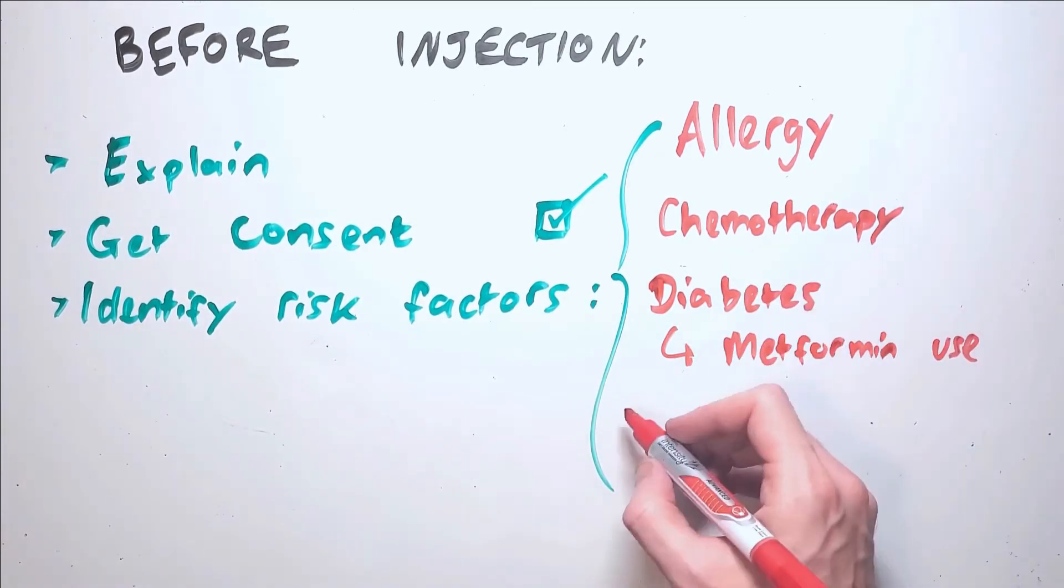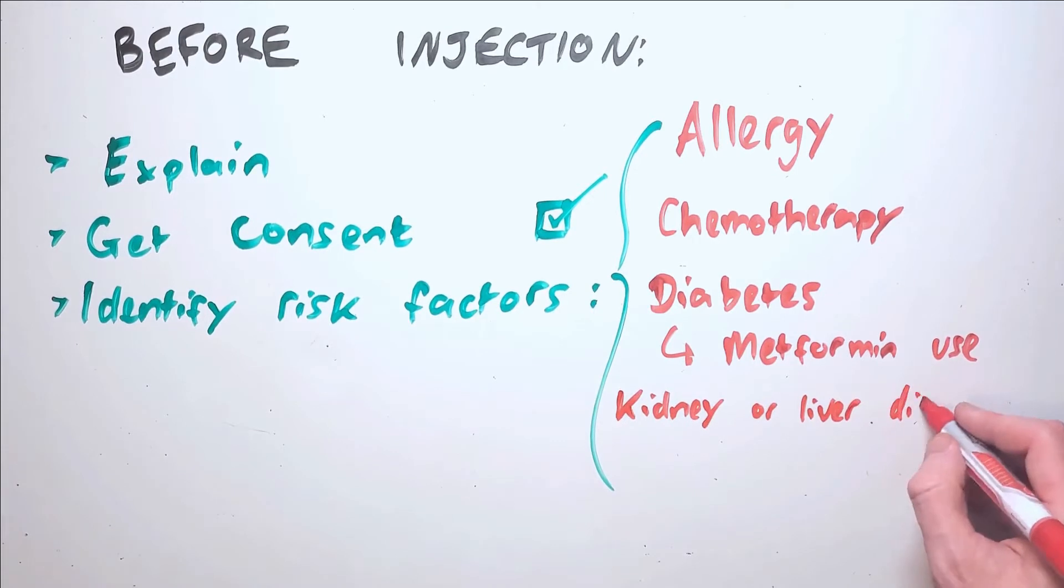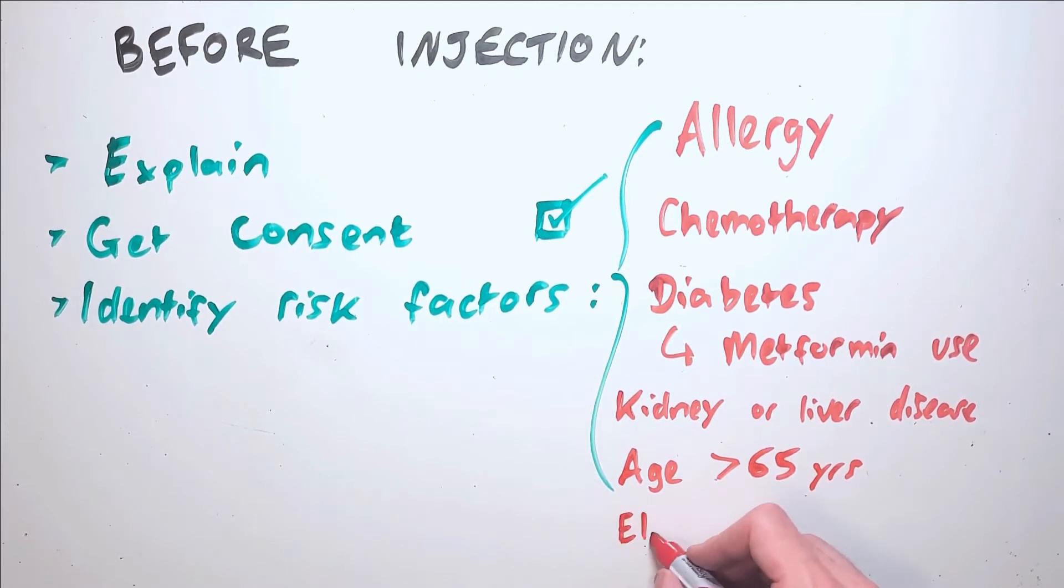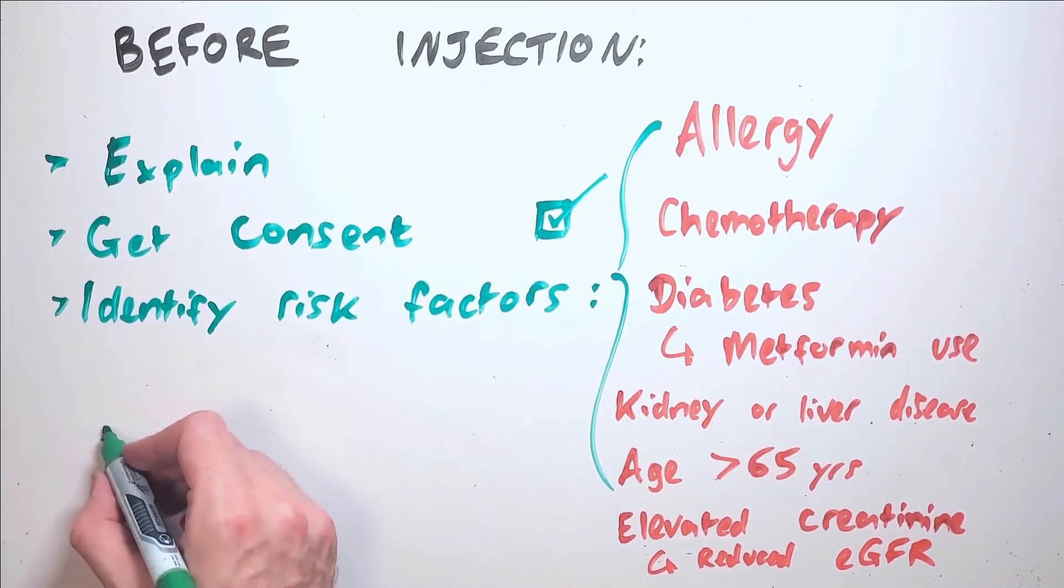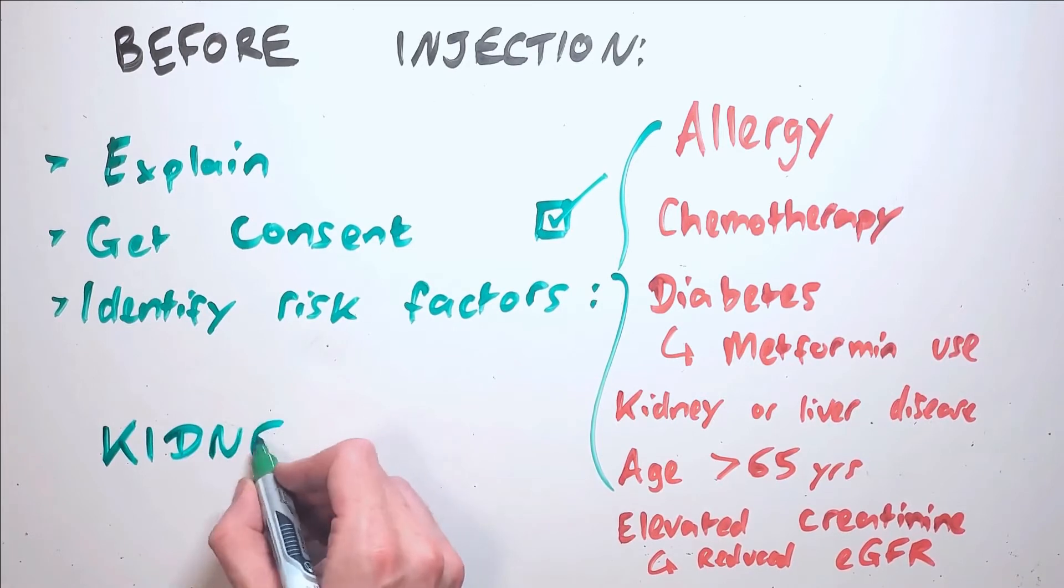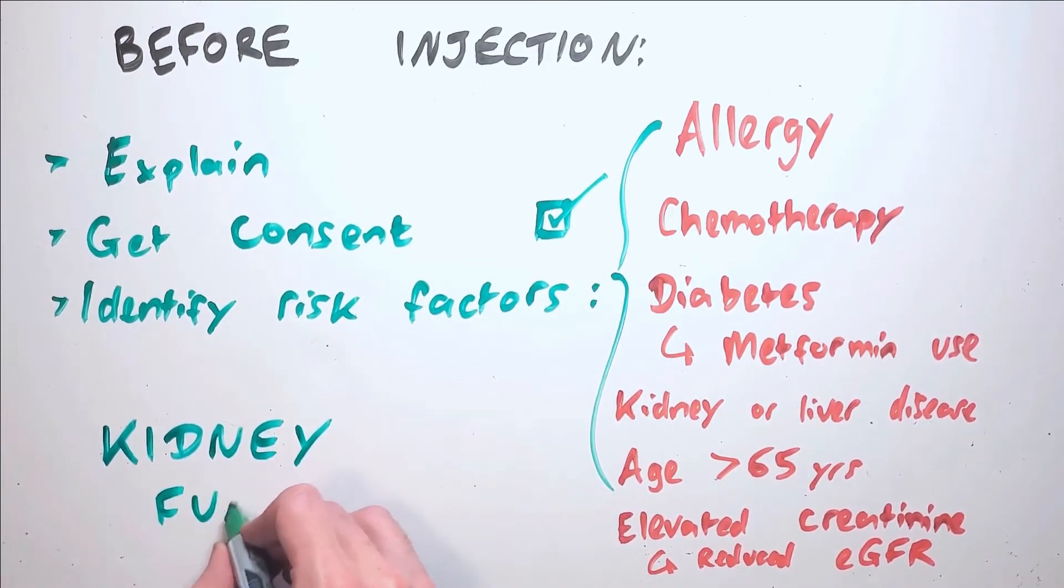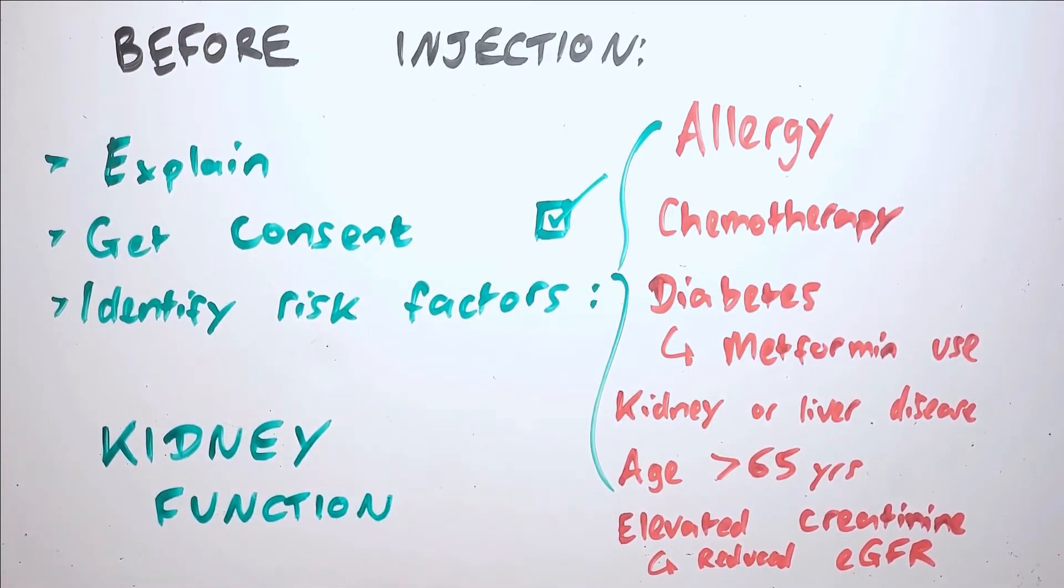Other risk factors include if they have a history of kidney or liver disease, if they are greater than 65 years of age, or if they have elevated creatinine levels which indicates that their kidney function is impaired. It's important to check the creatinine levels for patients who have risk factors because iodinated contrast is excreted through the kidneys, so we want to ensure that the patient will be able to eliminate the contrast without further damaging the kidneys.